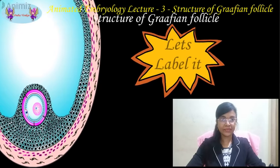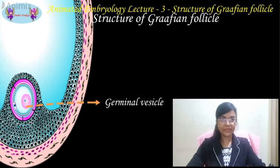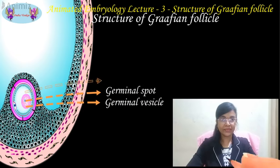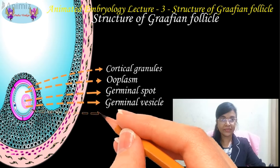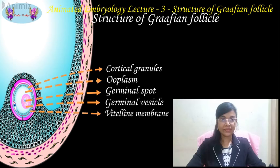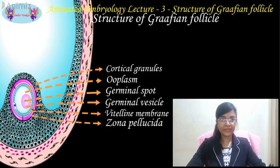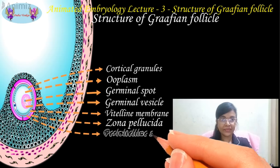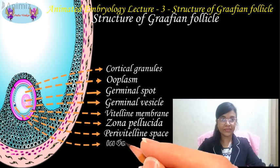Let's label the follicle together. The nucleus of the oocyte is called the germinal vesicle. The nucleolus is called the germinal spot. The cytoplasm of the oocyte is called ooplasm, and the periphery of the ooplasm contains the cortical granules. The outer membrane of the oocyte is known as the vitelline membrane. The thick transparent membrane covering the oocyte is known as the zona pellucida. The space between the zona pellucida and vitelline membrane is known as the perivitelline space, and the first polar body is found in the perivitelline space.